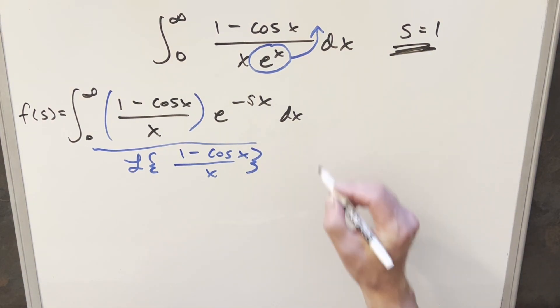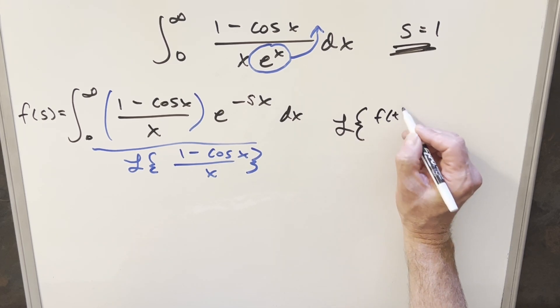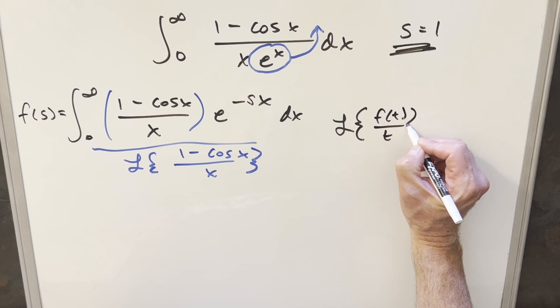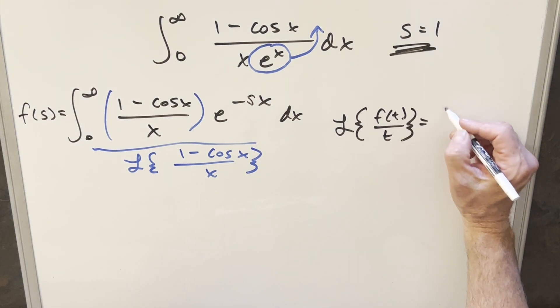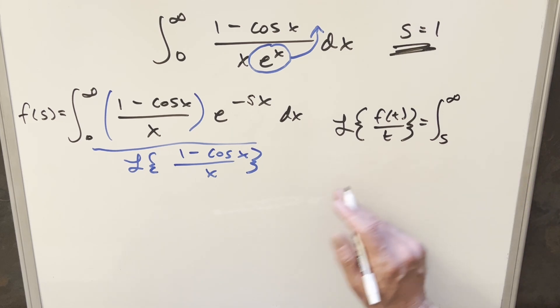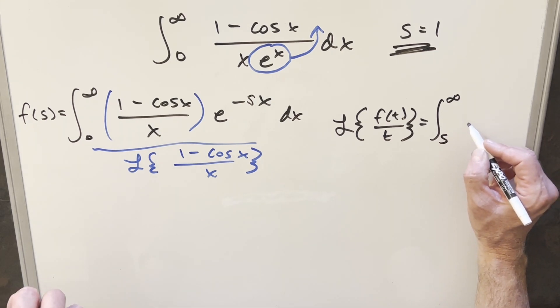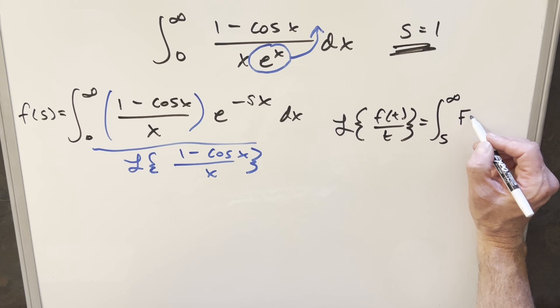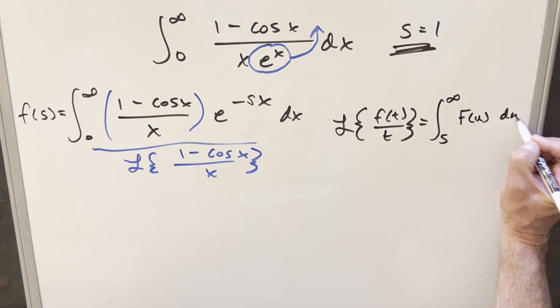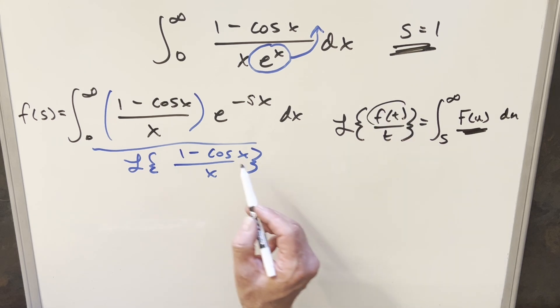So for this kind of Laplace transform here, we do have a nice formula we can use. I can write this, if we have the Laplace transform of f of t over t. What we can do on this is use this formula, write this as an integral going from s to infinity, choose a different variable than s, usually on the right side in our Laplace transform front line, we're going to have this as an s. So let's just write this as u. We're just going to need to integrate big F of u du, where this function here is going to be the Laplace transform of our f of t part.